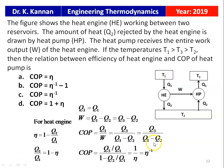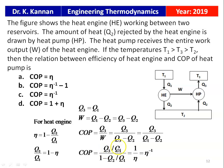Dividing numerator and denominator by Q1: COP = (Q3/Q1) / (1 − Q2/Q1). Since Q3/Q1 = 1 and 1 − Q2/Q1 = η, COP = 1/η = η^(−1). The correct answer is COP = η^(−1), option C.